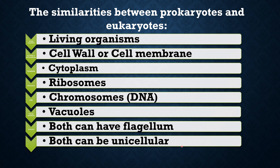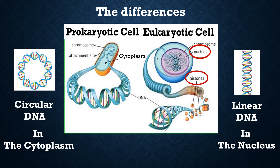Both kinds of cells can be unicellular. Prokaryotic cells are unicellular, and eukaryotic cells are multicellular or also unicellular. Now let's see the differences between prokaryotic cells and eukaryotic cells.